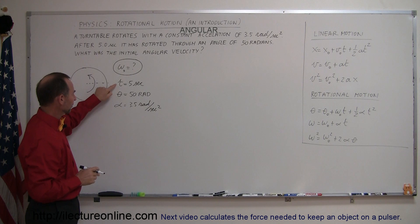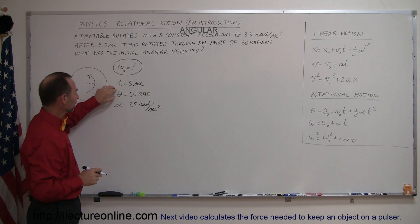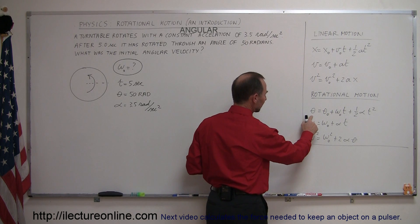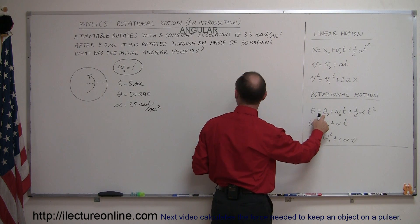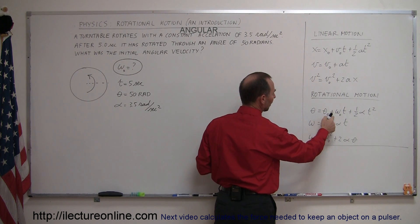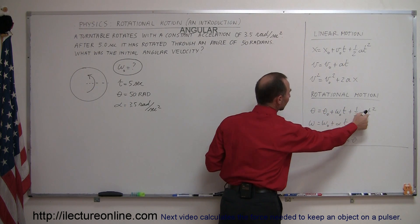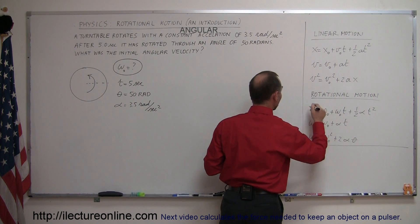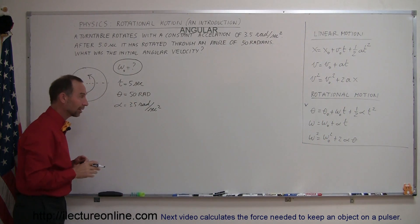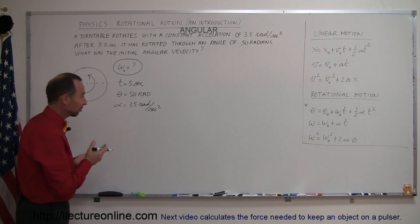So let's see here - we have theta, we have time, we have alpha. If I look at my first one, we have theta. Theta initial is not known, but if we assume that we start at zero, that's a good assumption. This is what we're asking for, we're given the time, we're given alpha. It looks like this equation right here is probably the right one. We may be in luck that that's the only equation we need. Let's try it.